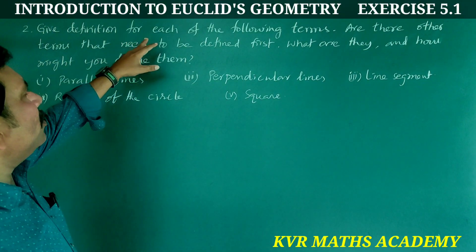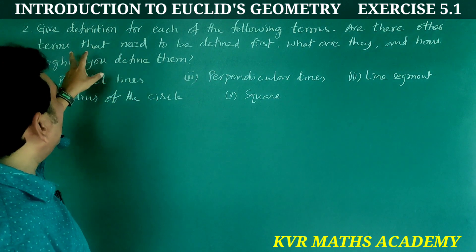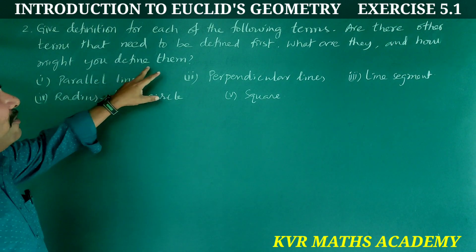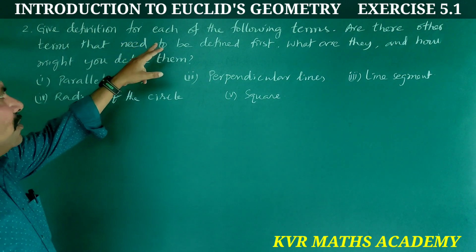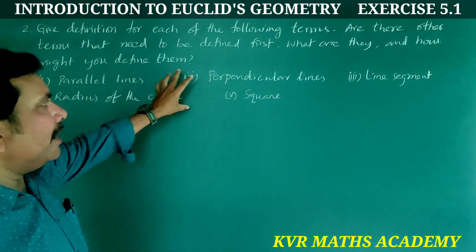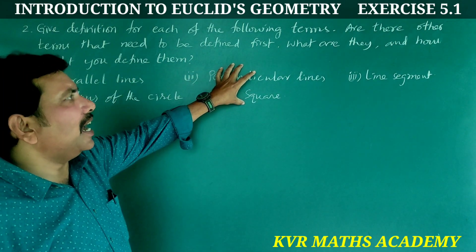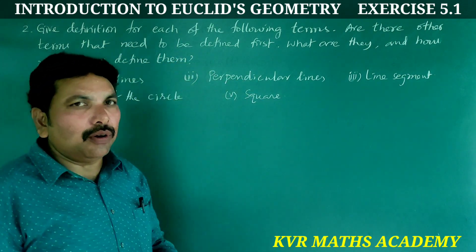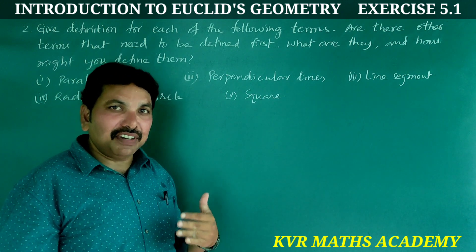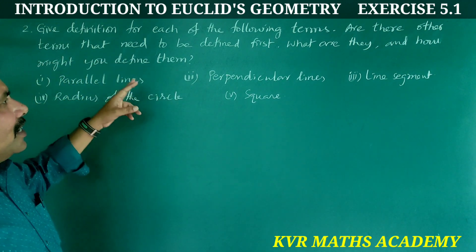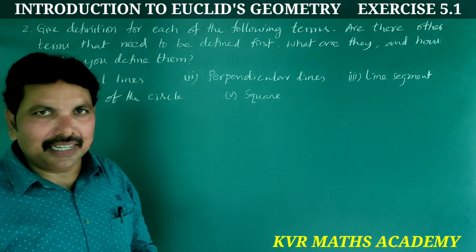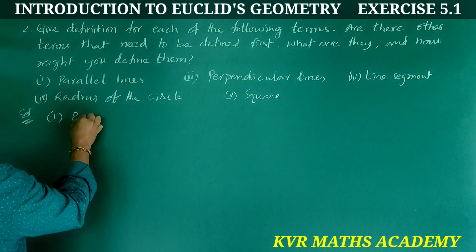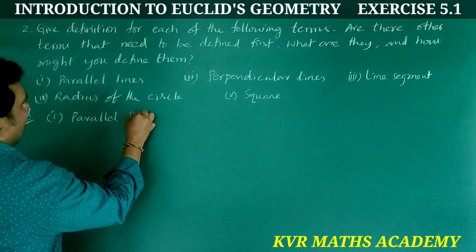Second question: Give a definition for each of the following terms. Are there other terms that need to be defined first? What are they and how might you define them? There are five terms. Let us take the first one: parallel lines.